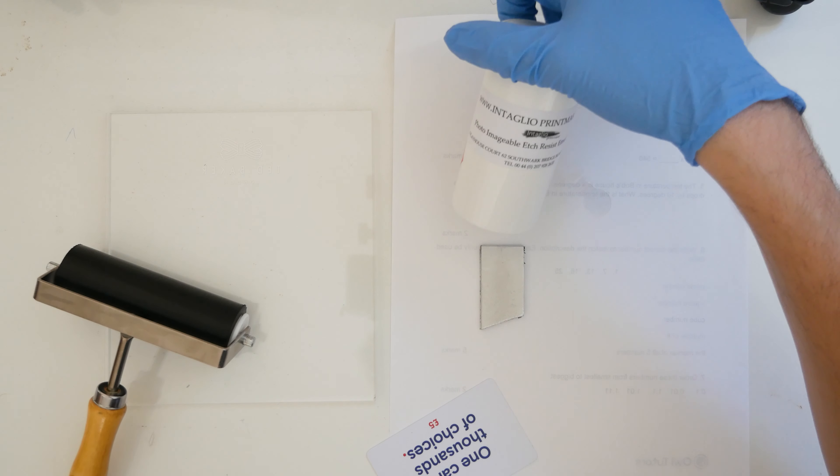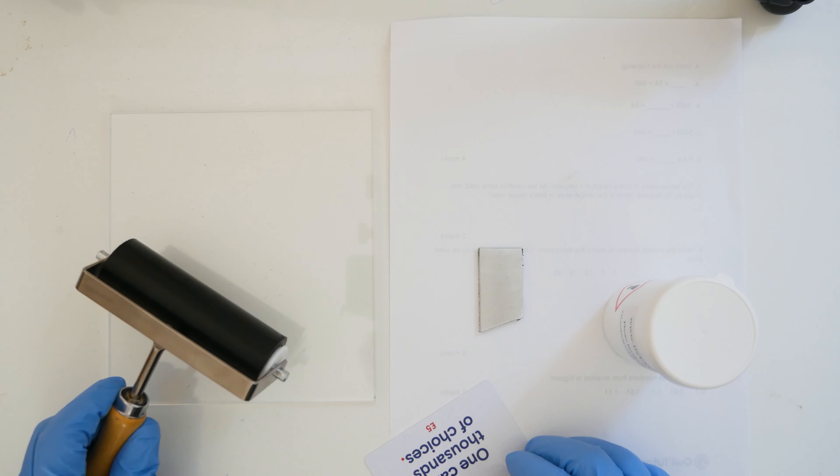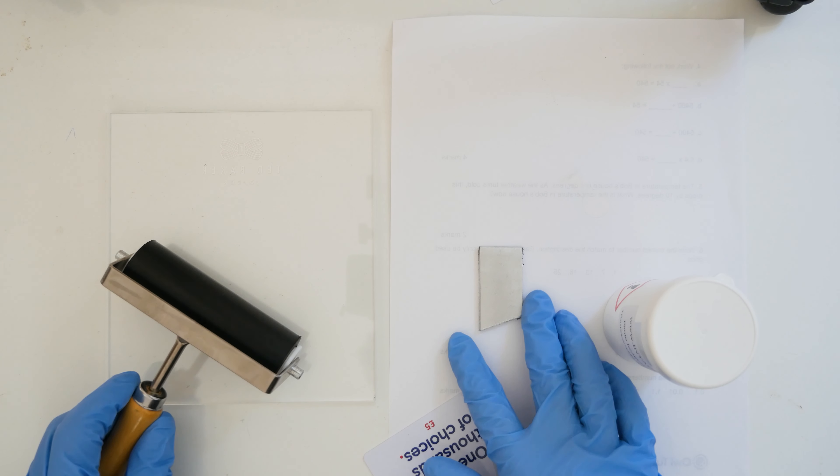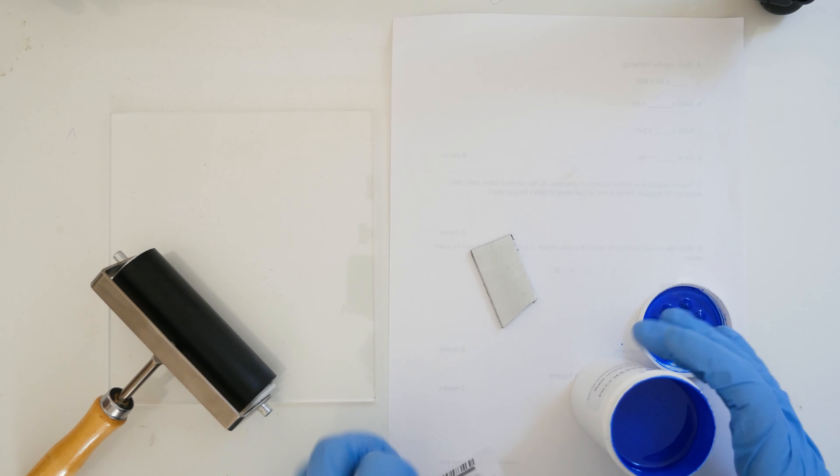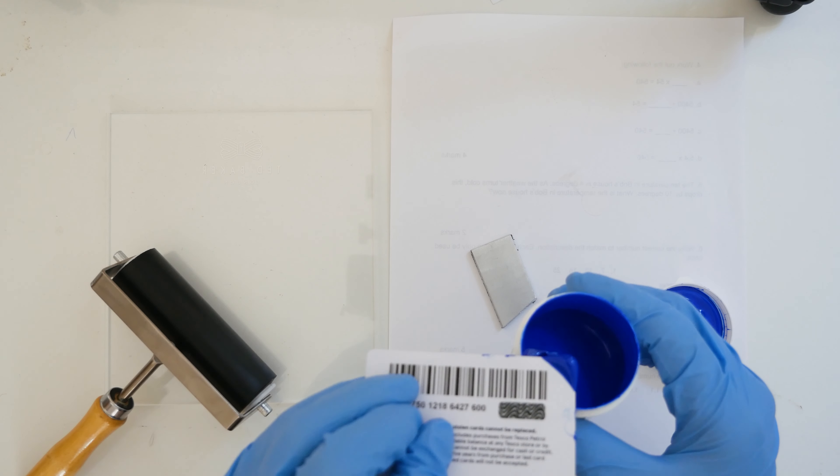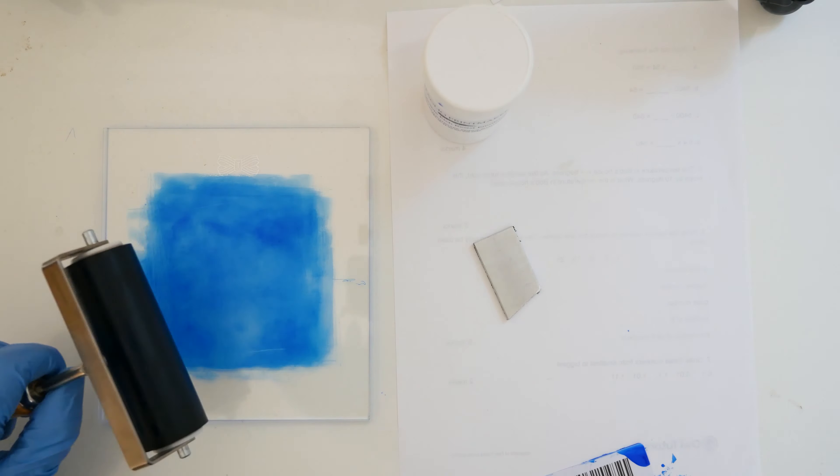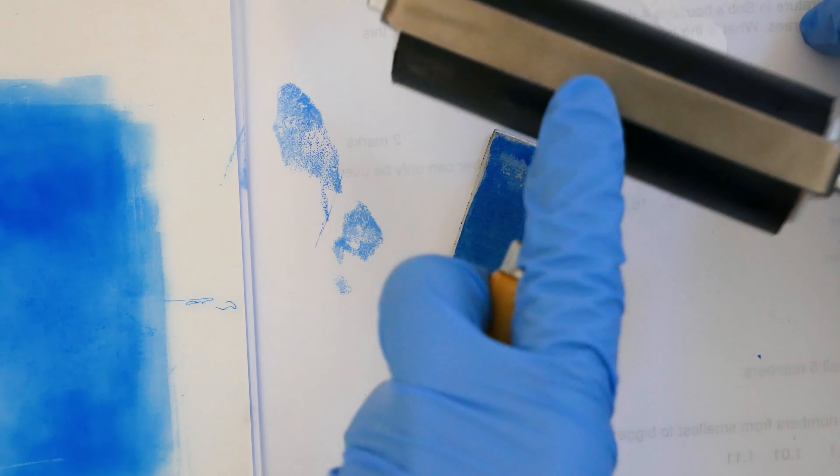We're going to be testing another strip with the photo imageable etch resist emulsion here. This time we're going to use a roller just to try and get a bit more of an even coat on the plate. I'm also going to be doing maybe two or three coats of this, so I'm going to let it dry and then apply another coat, because on our last test the etch resist was actually worn away in some areas. I want to try and build up maybe a few more layers and hopefully that would give it a little bit more resistance against the acid. We really don't need a lot here because this is for a very small test strip.